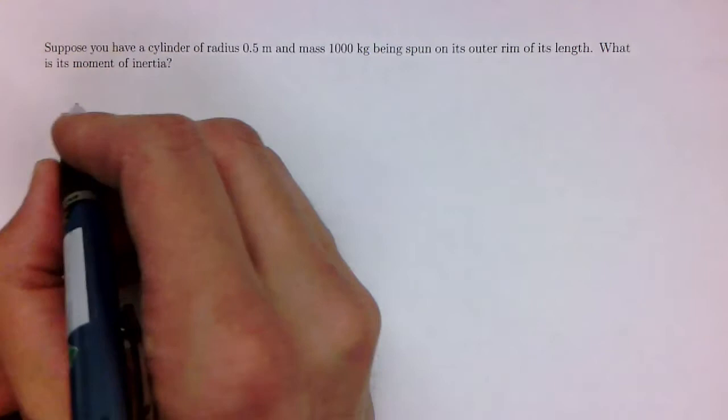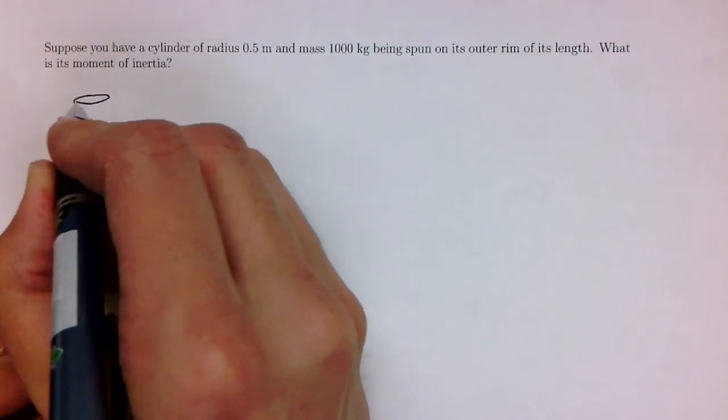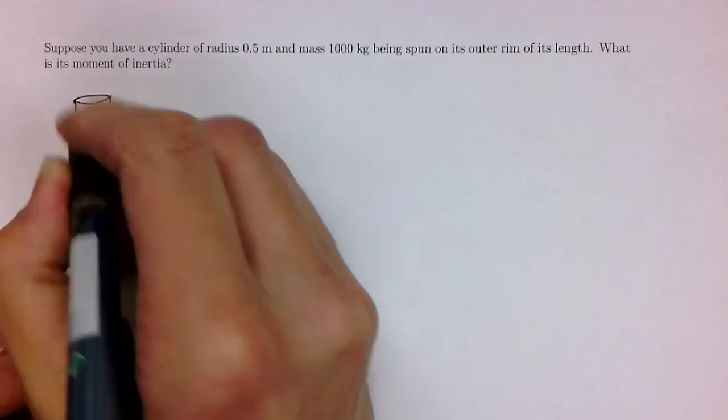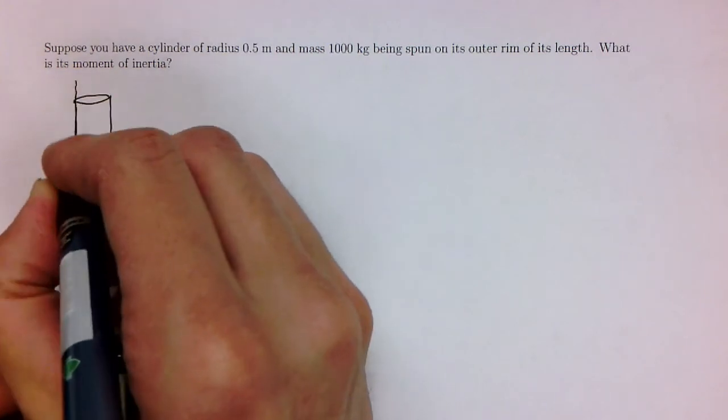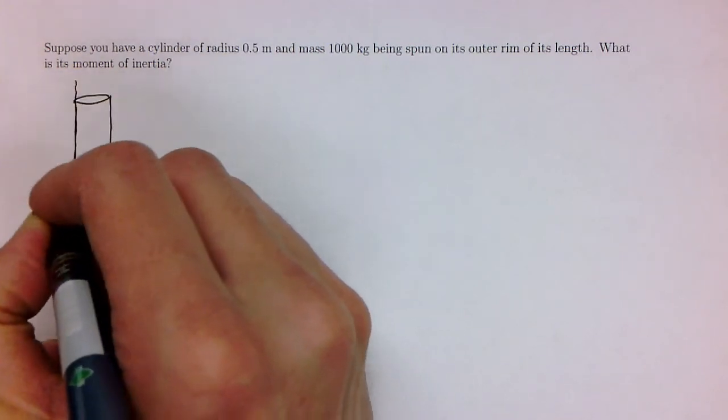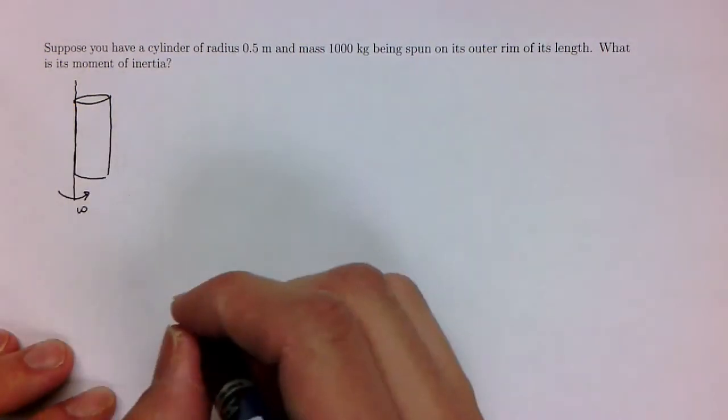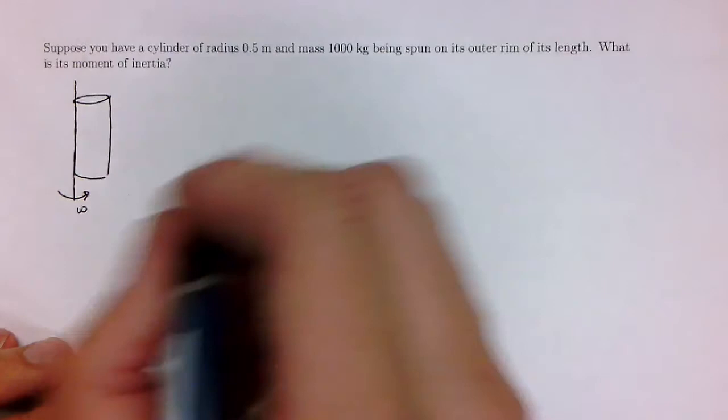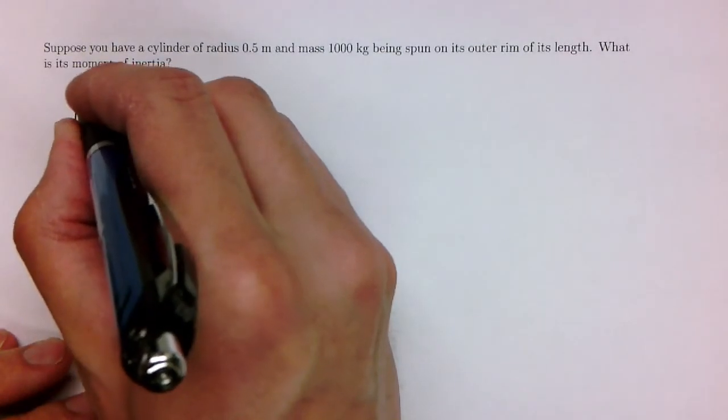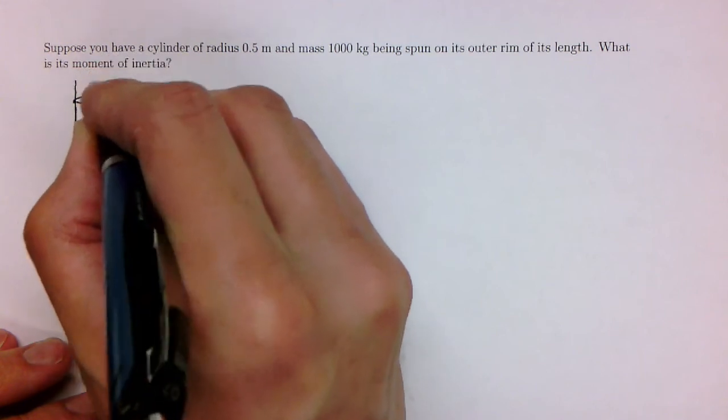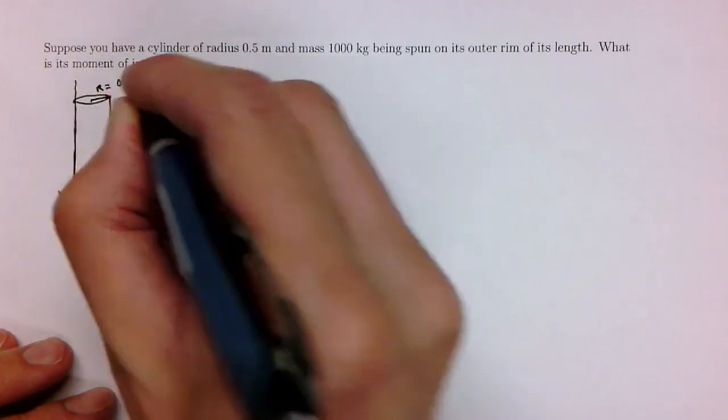Let's draw a picture of how this thing might look like. This is a disc, a cylindrical disc. And I'm going to draw my axis of rotation this way, and it's going to be spun around in this direction with some omega. So I have my disc, or my cylinder, and this radius R is equal to 0.5 meters.